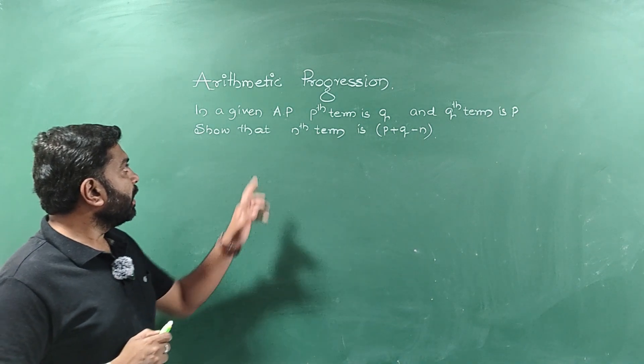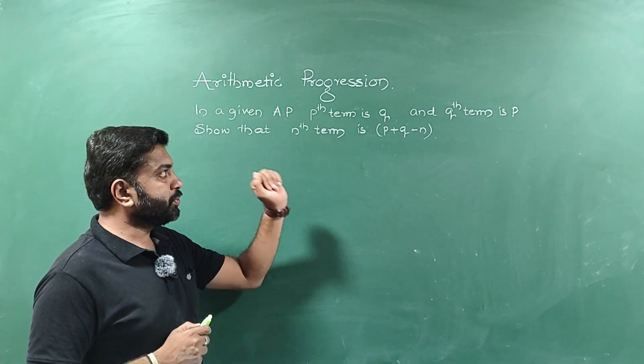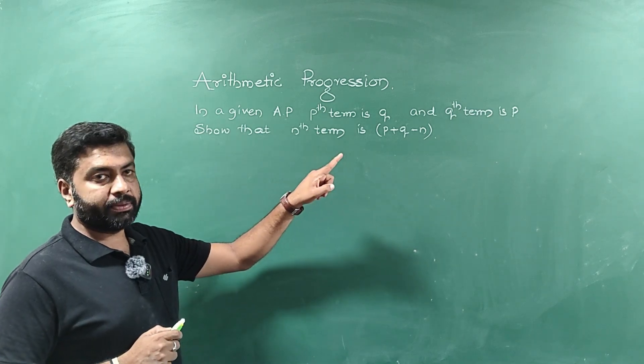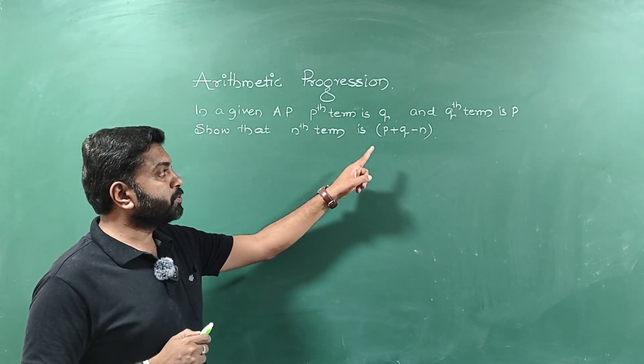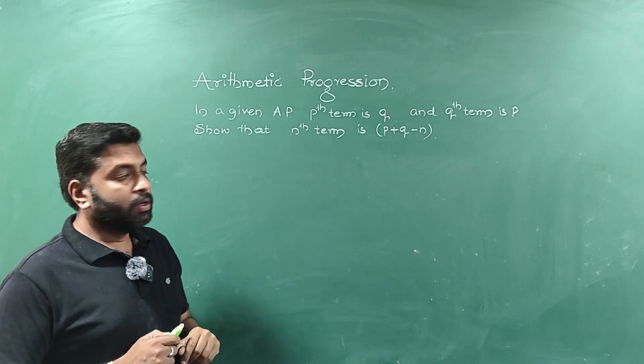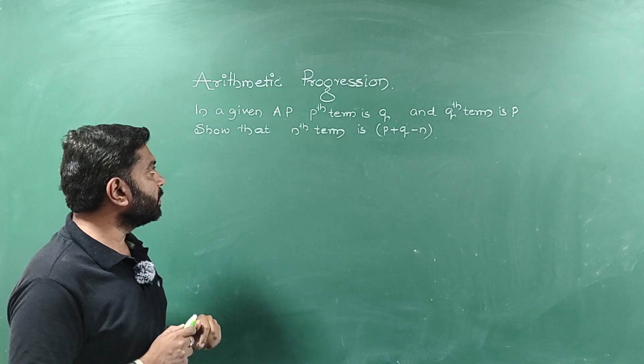In the next question, in a given AP, Pth term is Q and Qth term is P. Show that nth term is P plus Q minus n. So very important question from the examination point of view. Let's try to solve it.